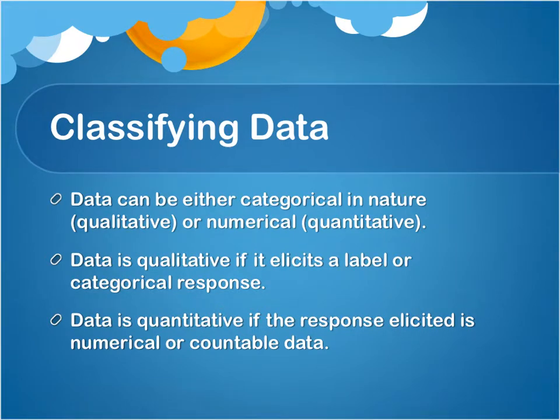When we gather data, we gather data by looking at two different types of variables. Our variables can either be qualitative, which means that they are categorical, or they can be quantitative, which means they are numerical.